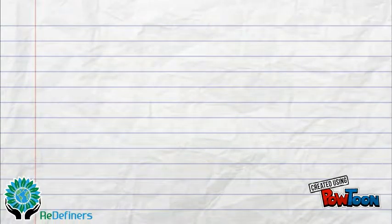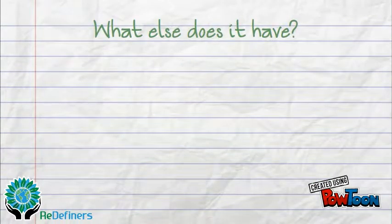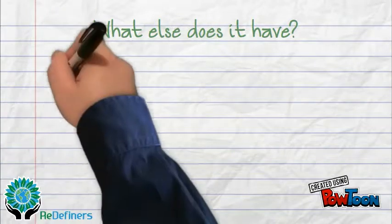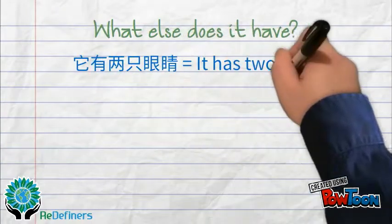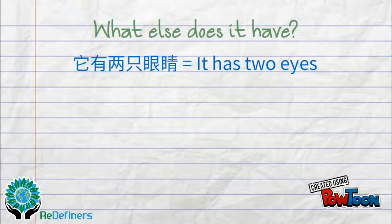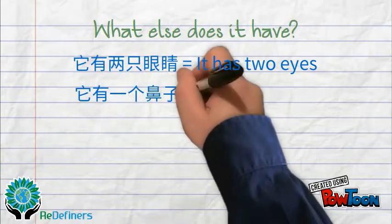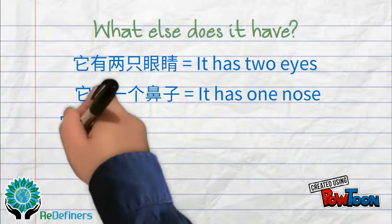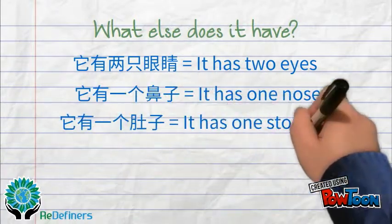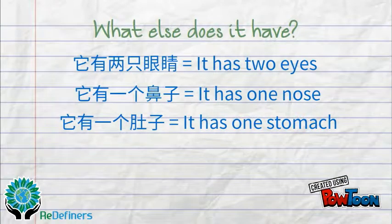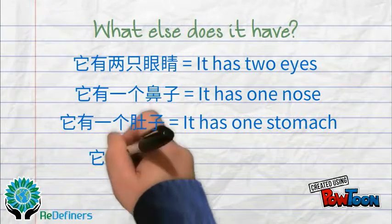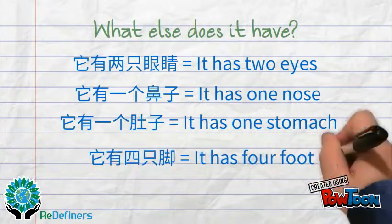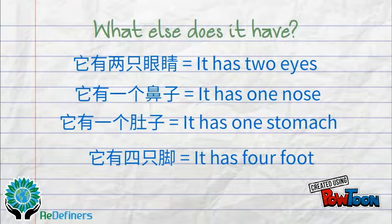So, what else does it have? You can say: 他有两只眼睛 — It has two eyes; 他有一个鼻子 — It has one nose; 他有一个肚子 — It has one stomach; 他有四只脚 — It has four feet.